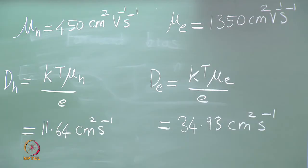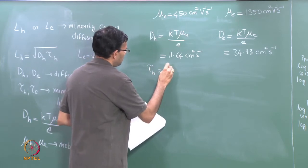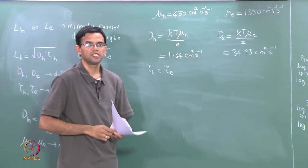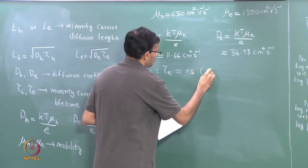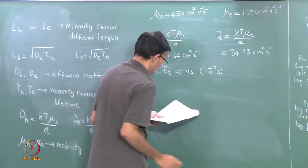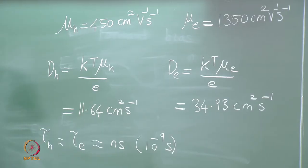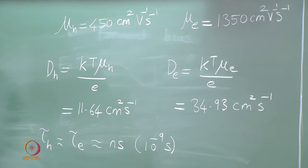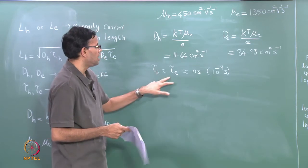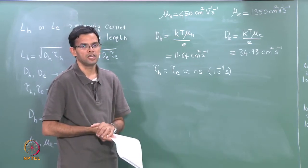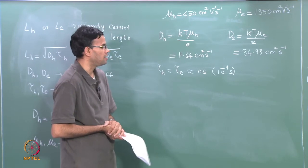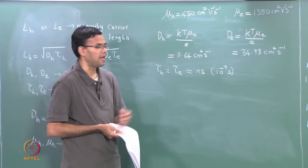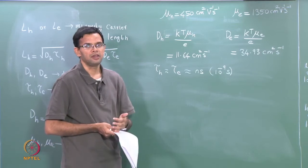Tau_H and tau_E are the minority carrier recombination times. Typically tau_H and tau_E are of the order of nanoseconds, 10 to the power of minus 9 seconds. These numbers are different from the scattering times that we saw earlier — scattering times refer to the time for carrier-phonon interactions, whereas tau refers to the time for electrons and holes to recombine. So the electron or hole can undergo multiple scatterings because we saw that a scattering time is around picoseconds, before they recombine.